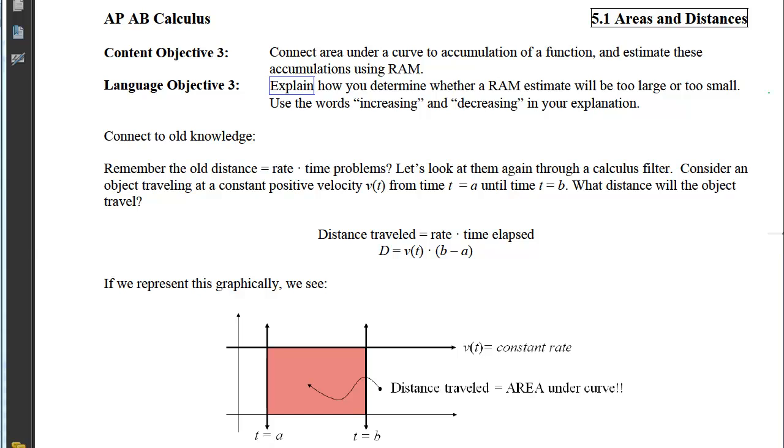Let's consider an object traveling at a constant positive velocity from time t equals a until time t equals b. The distance that the object will travel will be the rate, which is that v(t), times the time elapsed. If we represent this graphically, we can have this velocity, which is a constant rate, and then the time equals a represents the left boundary, and the time equals b equals the right boundary.